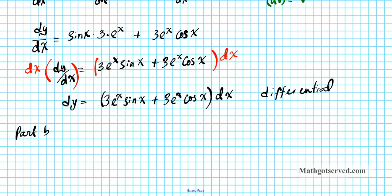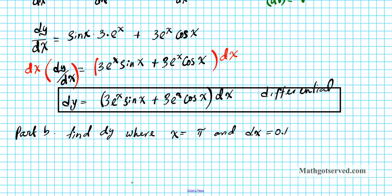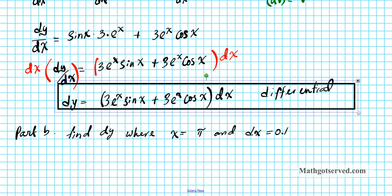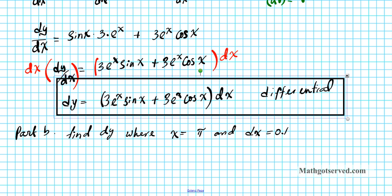For part b, we are to find dy where x equals pi and dx equals 0.1. Let's go ahead and evaluate the value of our differential for the specified x and dx values. This is a simple substitution problem — we substitute into our answer from the first part and simplify.